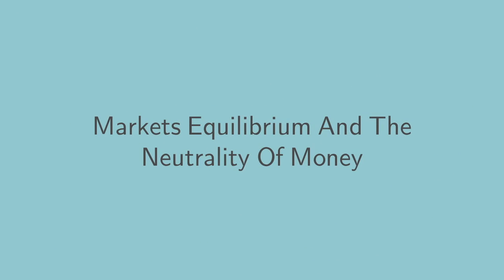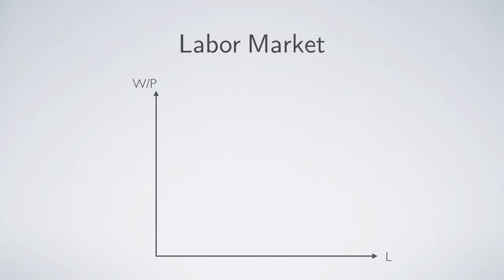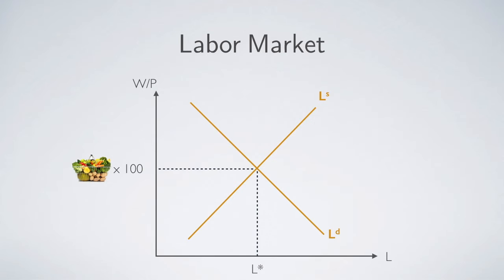Now we want to talk about market equilibrium when there is money and the neutrality of money. The first market is the labor market. There is a labor supply curve with a positive slope with the real wage rate, because household work incentive is governed by real terms — the purchasing power they can get for working. The labor demand curve is related to the productivity of labor. The intersection determines the equilibrium real wage rate and equilibrium hours L-star. The real wage rate is what matters for labor.